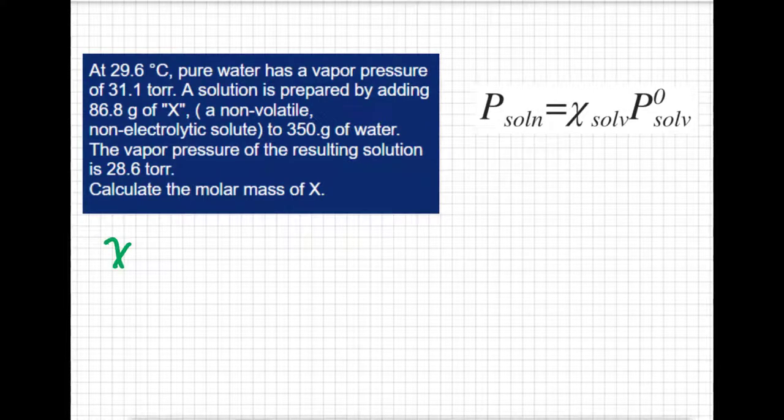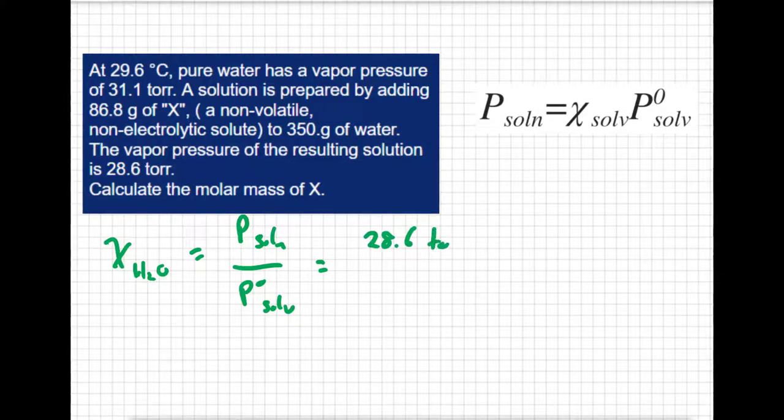So I'm going to say the mole fraction of solvent, in this case the solvent's water, is going to equal the vapor pressure of my solution divided by the vapor pressure of the pure solvent, the water. So that's going to be 28.6 torr divided by 31.1 torr, which equals 0.9196. So there's my mole fraction of the water.